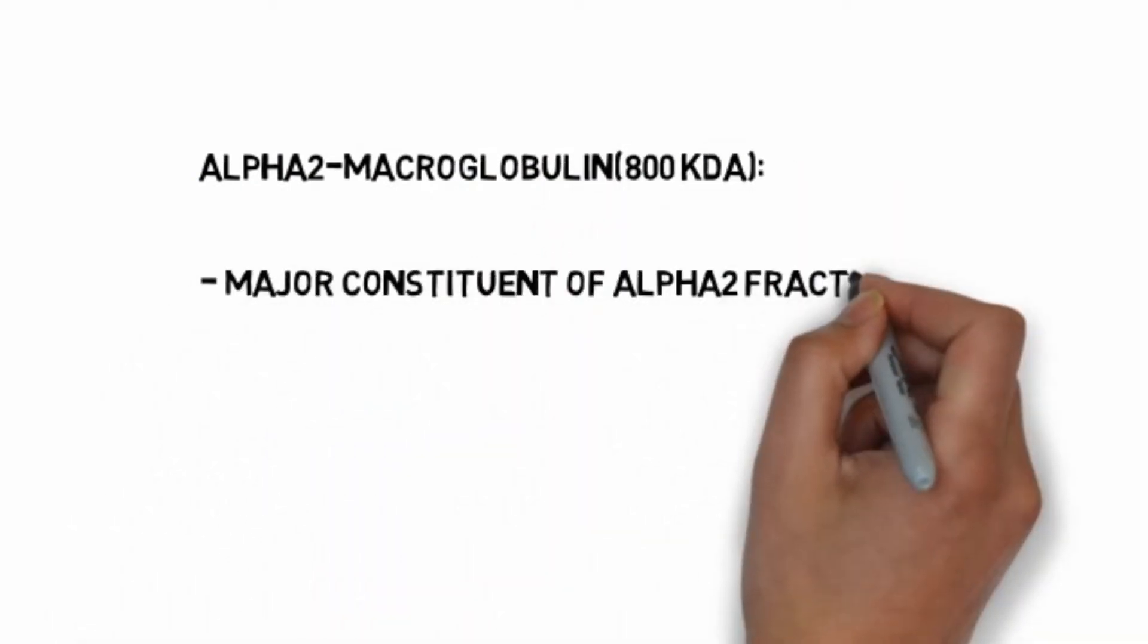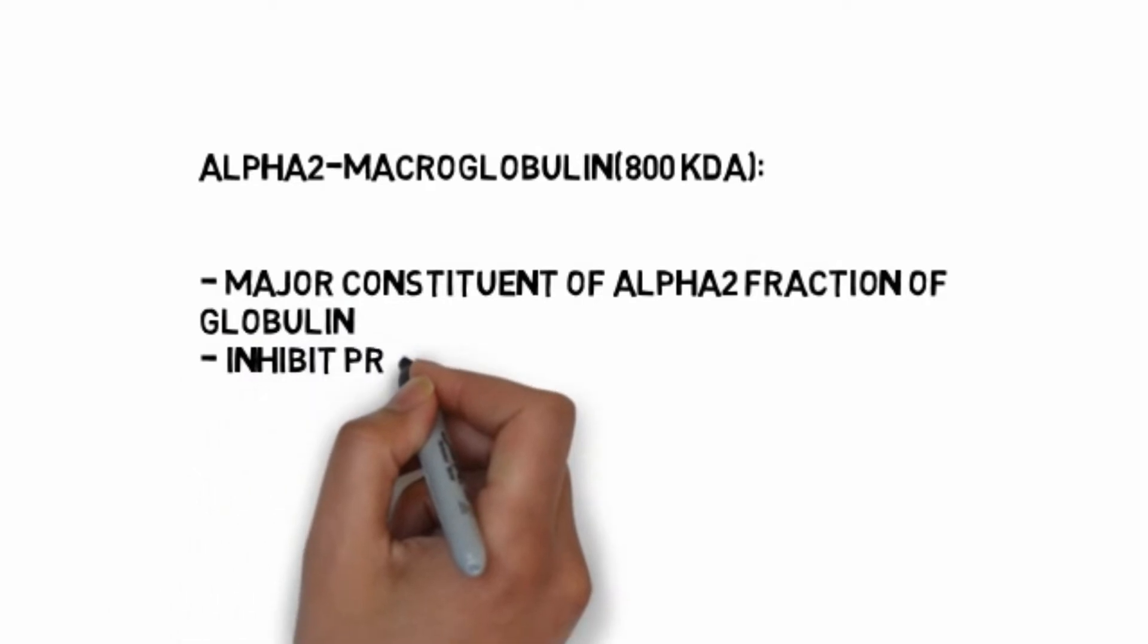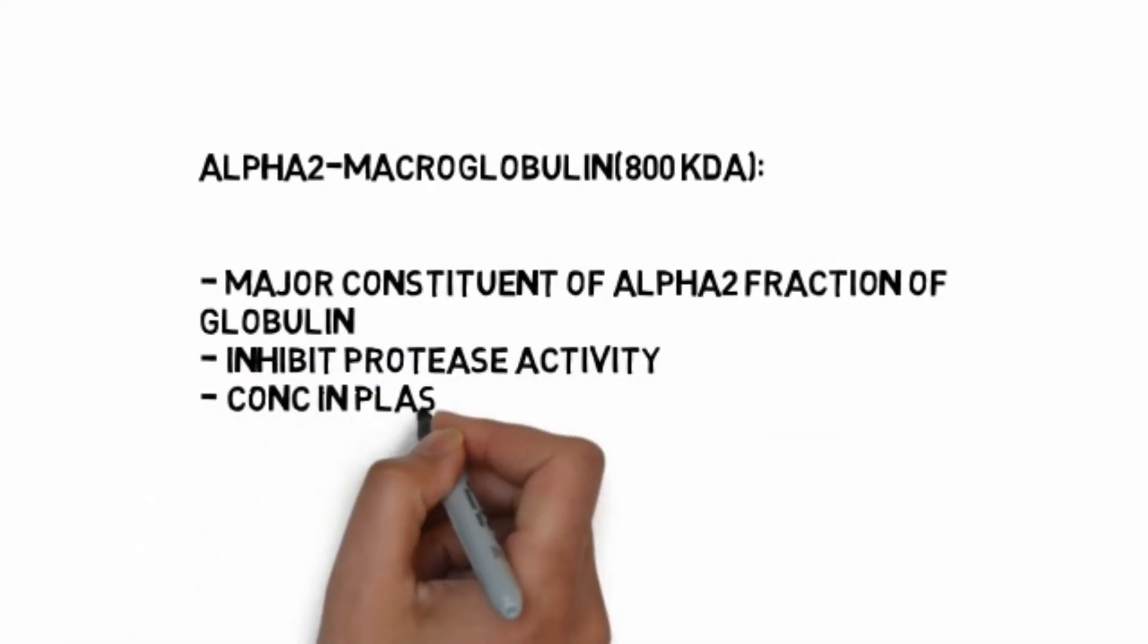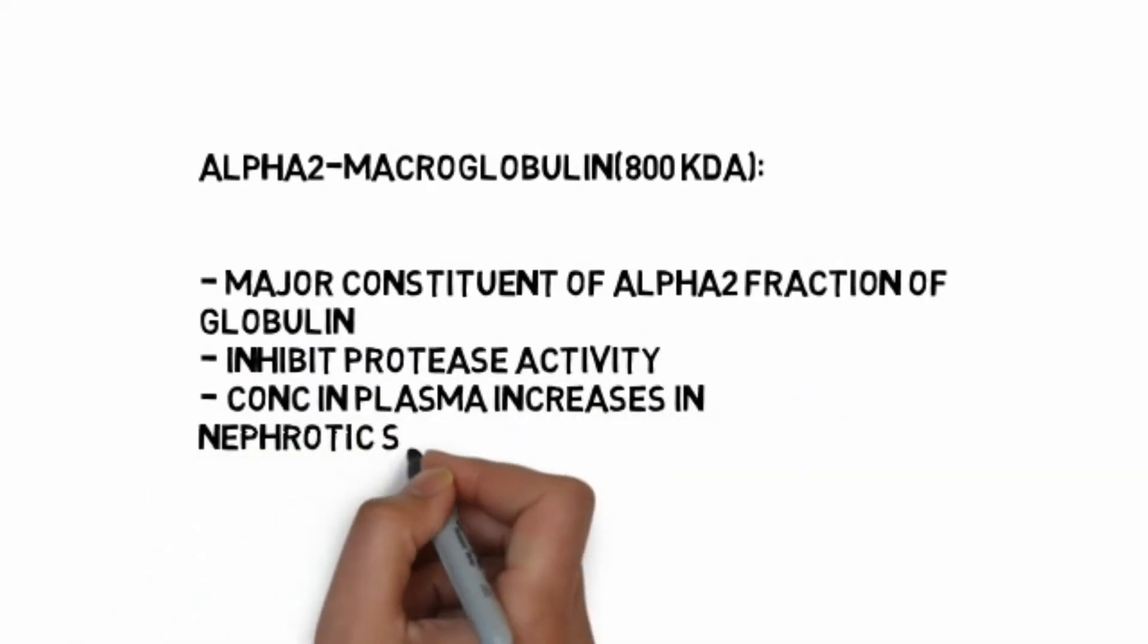Alpha-2 macroglobulin, 800 kilodaltons, is a major constituent of alpha-2 fraction of globulin. It inhibits protease activity. Concentration in plasma increases in nephrotic syndrome. Produced by liver.